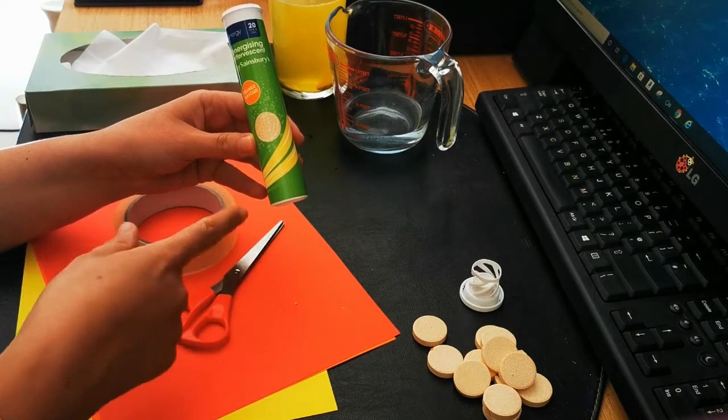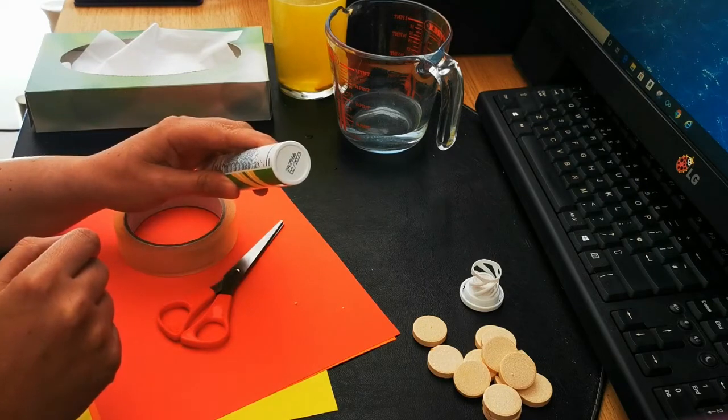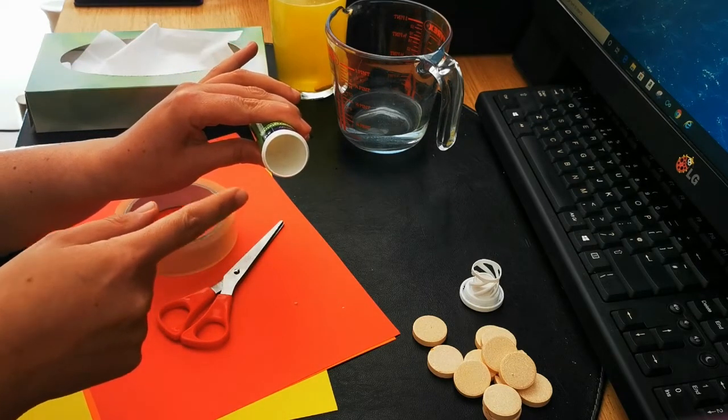You may want to make a nose cone. Now the nose cone should go on to the sealed end of the rocket, because you're going to need to leave the other end open so that you can pour the chemicals in later on.